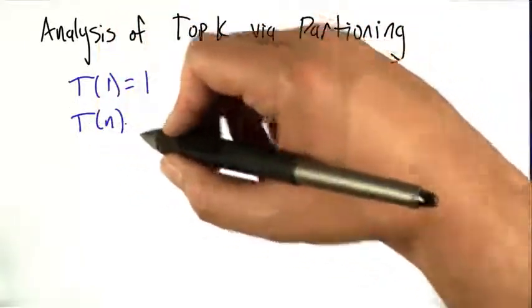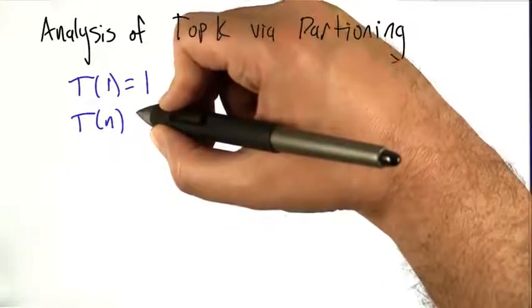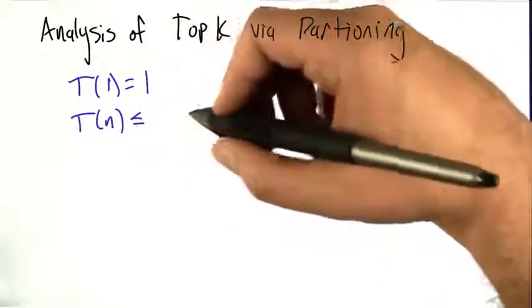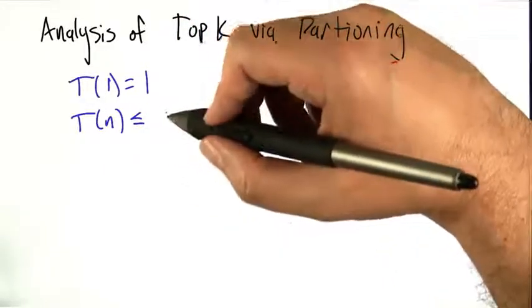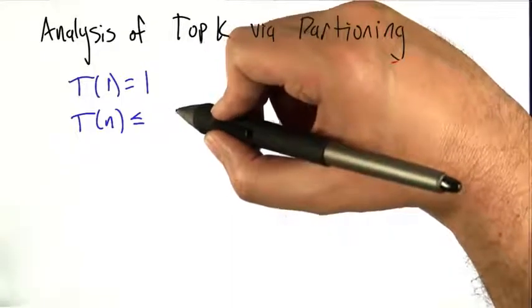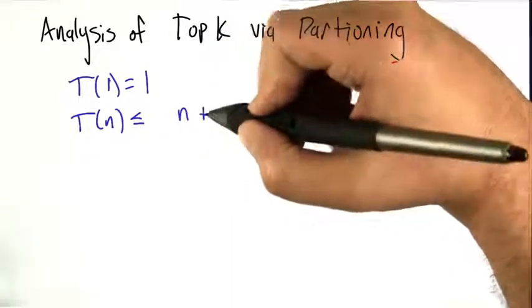But we can put down a bound. So what does it do? First it does the partitioning operation, which runs through all the elements of the list. That takes time n. Then what's going to recurse?